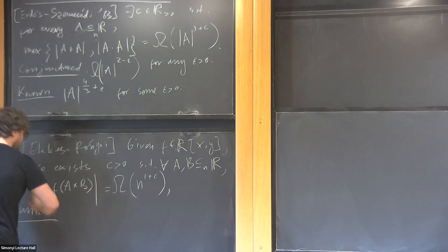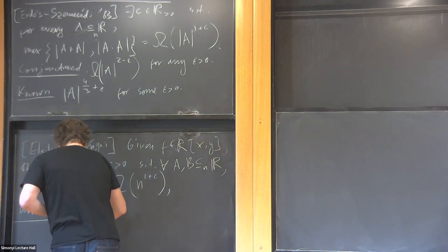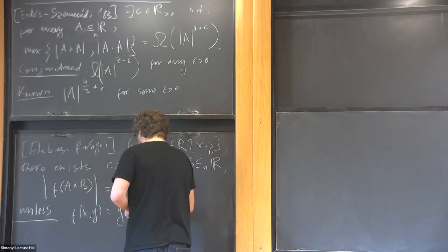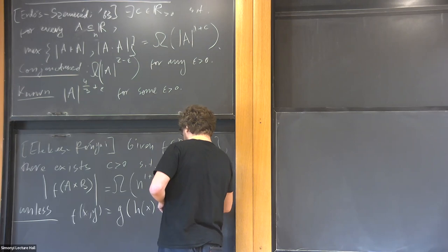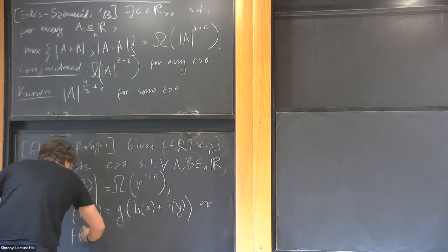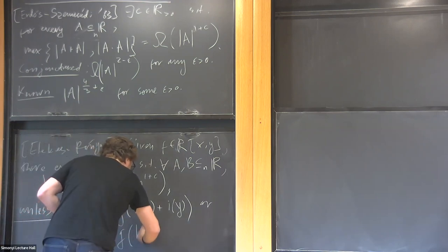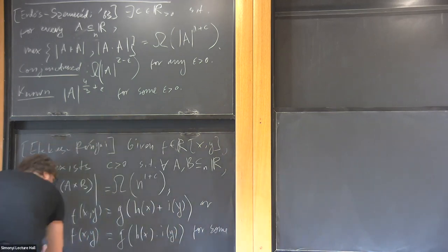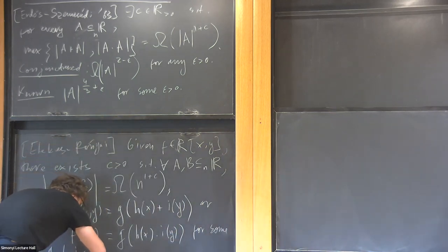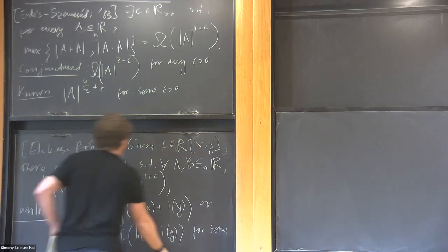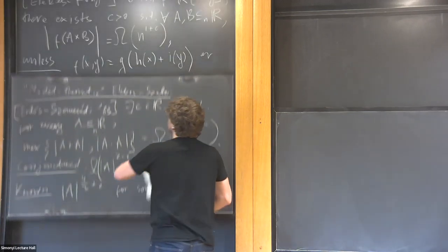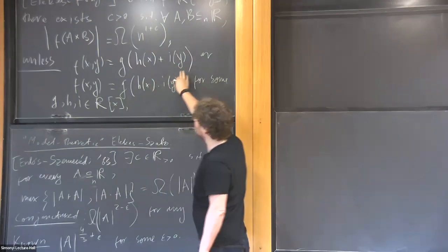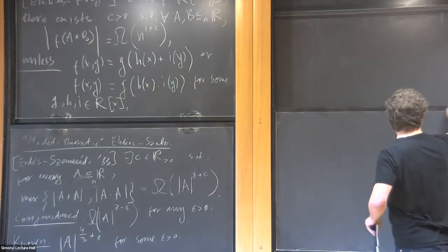The content of this theorem is that we can identify explicitly the exceptional cases. Unless f(x,y) is an additive polynomial — of the form g(h(x) + i(y)) — or multiplicative, of the form g(h(x)·i(y)) for some univariate polynomials g, h, i — so as long as there is any interaction at all between addition, multiplication, and our polynomial, we're going to have this expansion. This is a result for two variables.